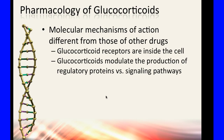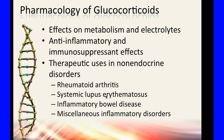The pharmacology: glucocorticoid receptors are inside the cell and they modulate the production of regulatory proteins versus signaling pathways. In layman's terms, they stay inside the cell and modulate the production of proteins that need to come in and out. This results in effects on metabolism and electrolytes, as well as anti-inflammatory and immunosuppressant effects — some of which can be adverse reactions.